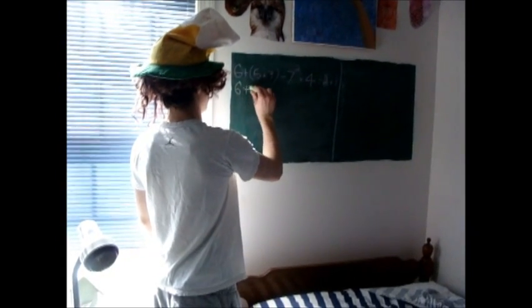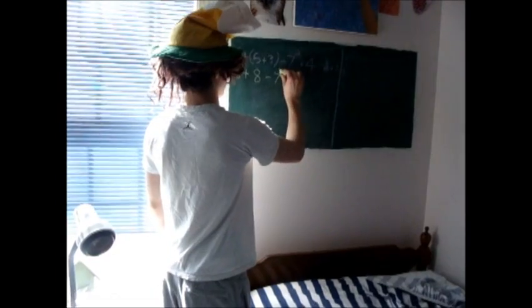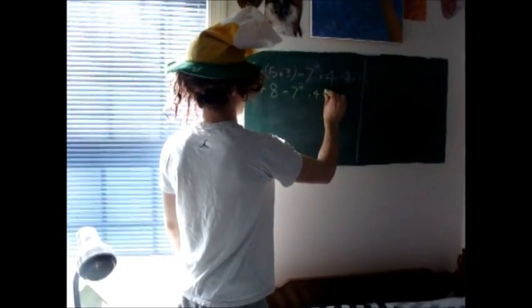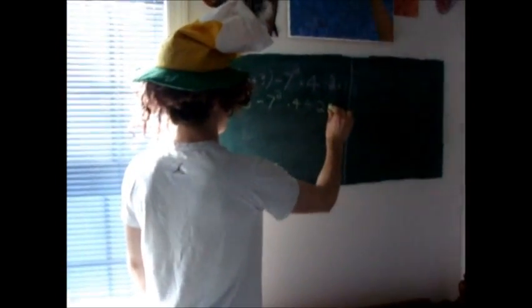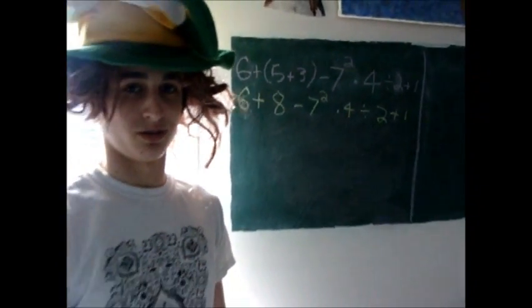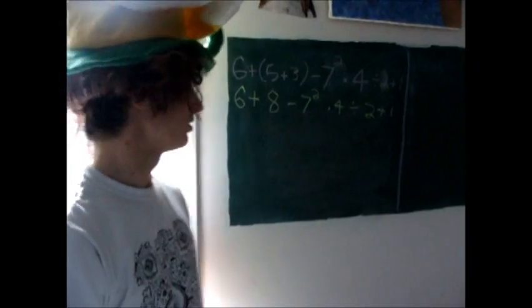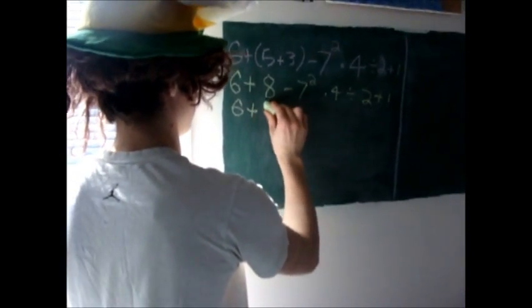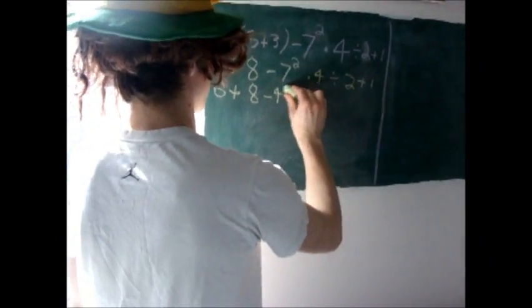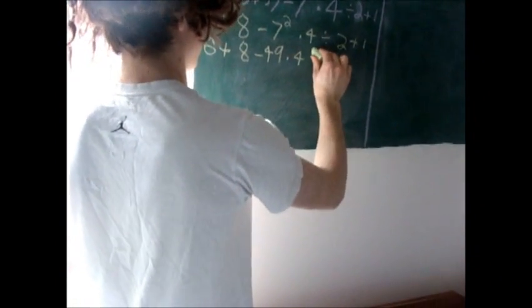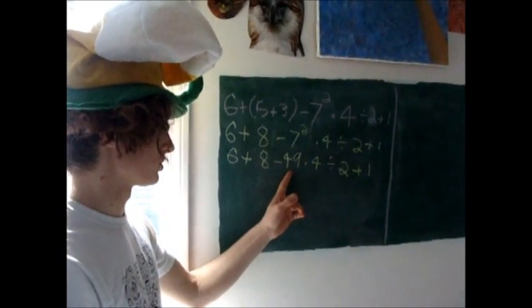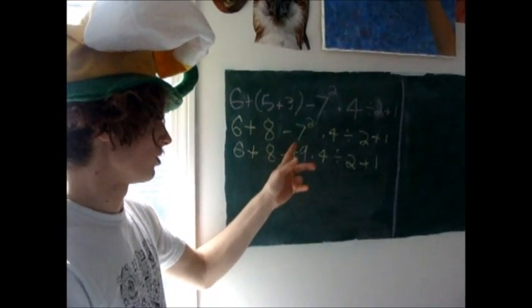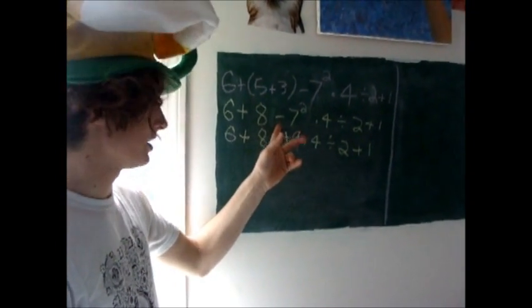Please excuse my dear Aunt Sally. P stands for parentheses. So, starting with the expression: 6 plus 8 minus 7 squared times 4 divided by 2 plus 1. It is not positive 49, as the negative 7 was not in parentheses, so you only do 7 squared and then keep the sign out in front, giving negative 49. The E stands for exponents.